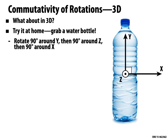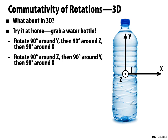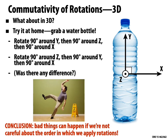Now let's do it another way. Put it back to the original configuration. This time rotate around the Z axis first, then rotate 90 degrees around the Y axis, and finally rotate 90 degrees around the X axis. If you've done this right, what you should find is that you just spilled water all over your desk — because in 3D, rotations really do not commute. Same rotations, different order, different result. The best proof is to just physically do it.